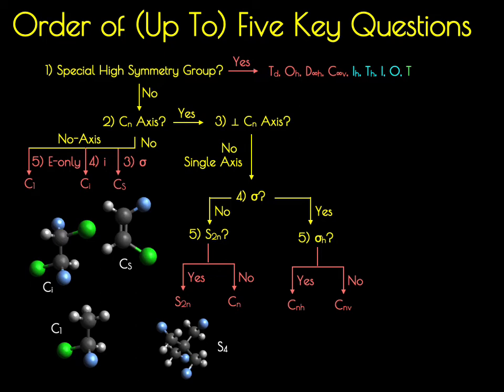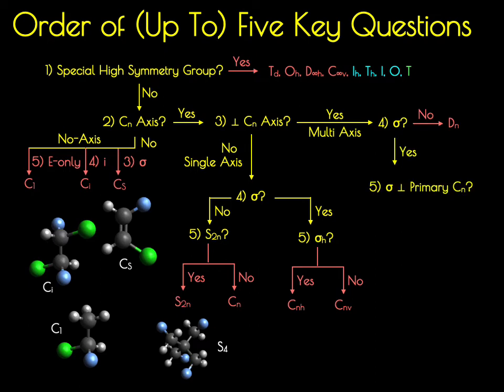That takes care of the single axis rotational point groups. Going back to question 3 about the perpendicular CN axis: if your molecule has a perpendicular CN axis, you're in a dihedral point group. Then ask: is there a mirror plane? If there is no mirror plane, you're in a DN point group. If there is a mirror plane, ask whether it's perpendicular to the principal CN axis — a sigma H. If yes, you're in a DNH point group; if not, you're in a DND point group.